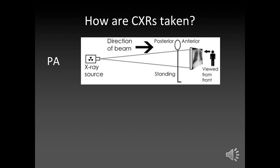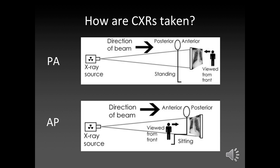You have an x-ray source and you have a detector, which is where the little picture of the chest x-ray is, and in between you stand the patient. When it's PA, the source is behind and the detector is in front, so they shine a beam through the patient and it will land on there. With an AP, it's the other way around — you essentially have the source in front and the detector behind.